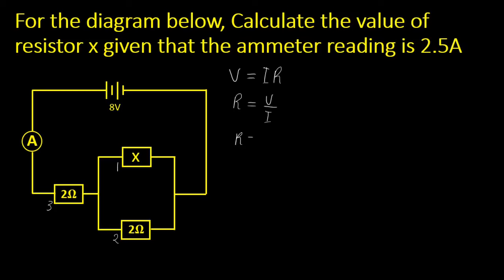So resistance is equals to voltage over current. The total resistance in this case: the voltage reading is 8 volts and the current reading is 2.5 amps. So this will give us a total resistance of 3.2 ohms.